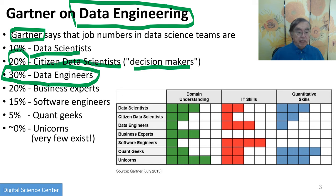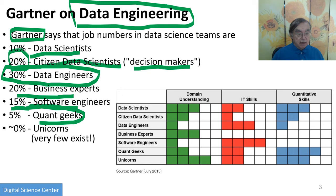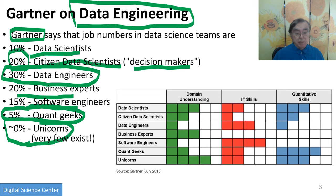Then we have the experts on the business, and we have the software engineer, and the quant geeks — the physicists who really know important aspects of machine learning. And then we have the total experts on everything: the unicorns. People can be unicorns and companies can be unicorns. It's good to be a unicorn — they're the ones that are really cleaning up.